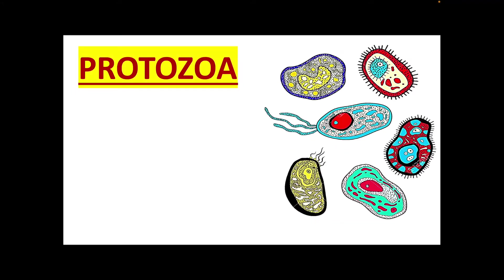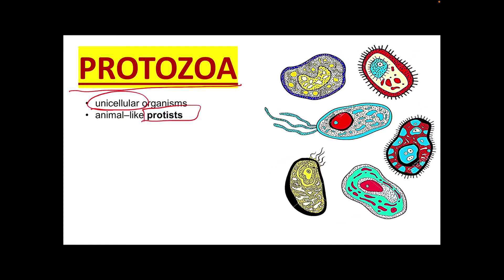What are protozoa? Protozoa are single-celled or unicellular organisms, like algae which are also unicellular. These protozoa are the lowest form of animal life and they are animal-like protists. Protists are diverse eukaryotic organisms that are not animals, plants, or fungi. These protozoa have no cell wall, but they do have an outer membrane called the periplast.